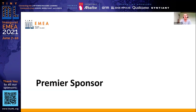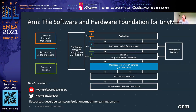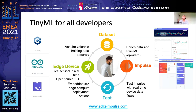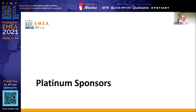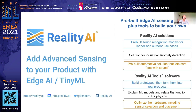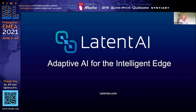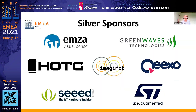I want to thank our sponsors who made this event possible. Premier sponsors include Newton, working on automated TinyML. Executive sponsors are ARM, Edge Impulse, and Qualcomm. Sentient is also a sponsor. Our Platinum sponsors are Infineon and Reality AI. Gold sponsors are Latent AI and SensiML. Silver sponsors are EMSA, Green Waves, HOTG, Imagimob, KISO, SEAT, and ST.